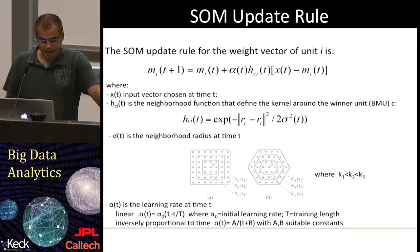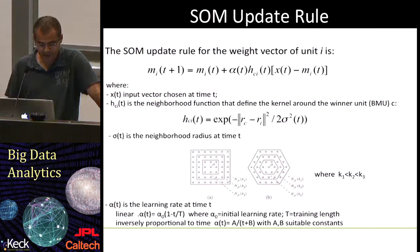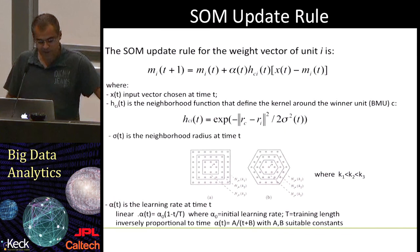This is the SOM update rule, which uses a function H called the neighborhood function that defines the kernel around the winner unit. Another important parameter is alpha, which corresponds to the learning rate. H is a non-increasing function of time and of the distance of unit I from the winner unit C. The training is usually performed in two phases: first we tune the map approximately to the same space as the input data, and then we fine-tune it.